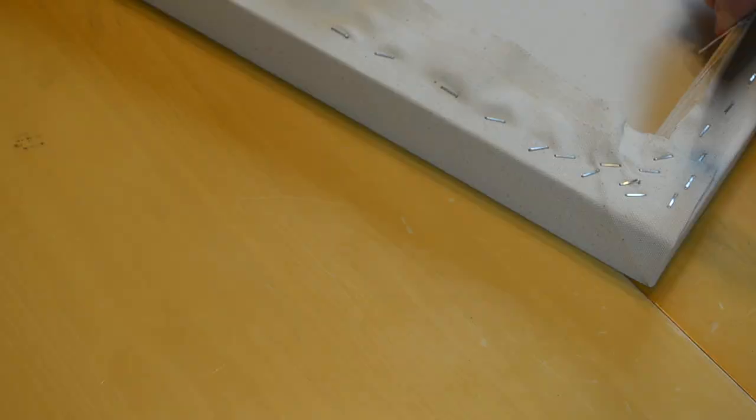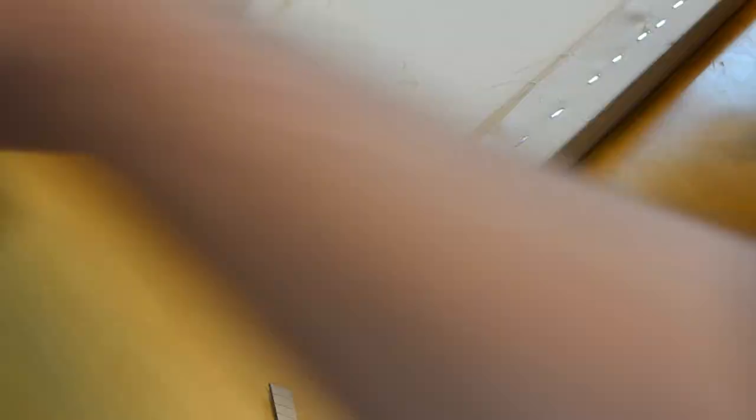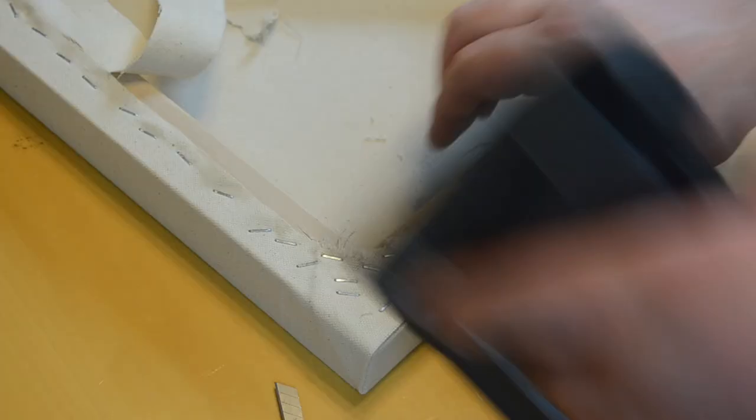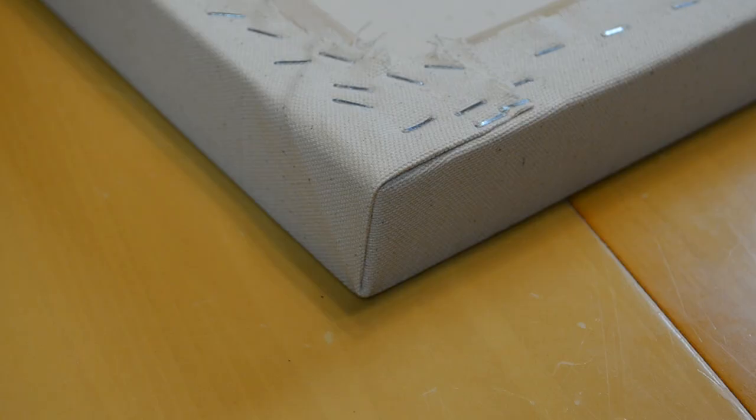Once you get that done, then you can cut away the excess canvas. Sometimes I toss in an extra staple or two to make sure everything stays in place. Then I flip the canvas over and you can tell that it is tight. It's almost as tight as a drum.